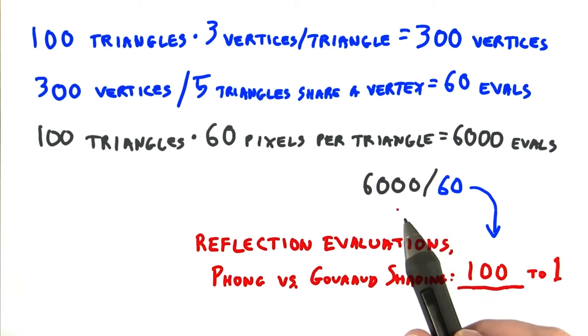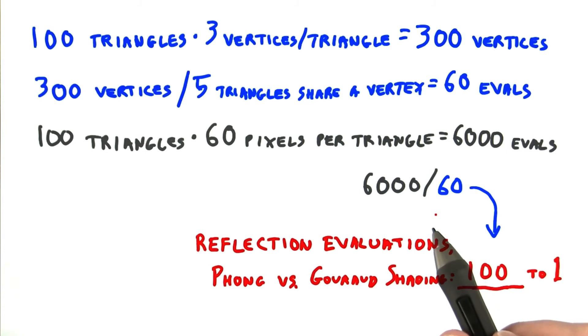Note that this doesn't mean that the program itself runs 100 times slower. There are mitigating factors, and other parts of the pipeline can be the bottleneck, which changes this ratio in practice.